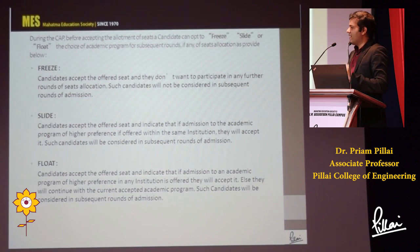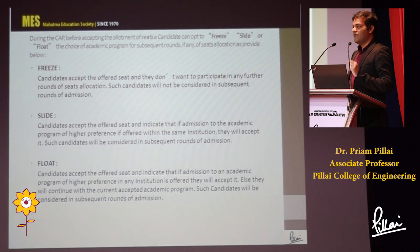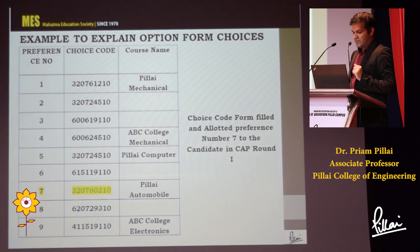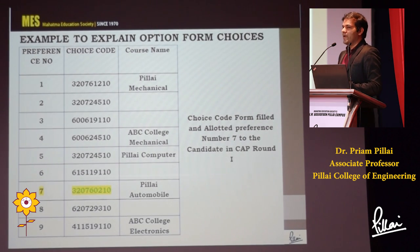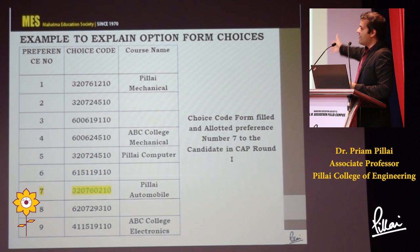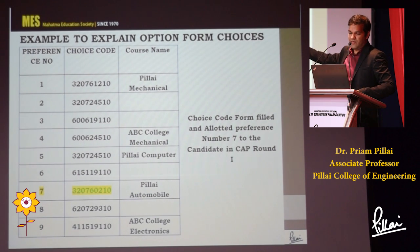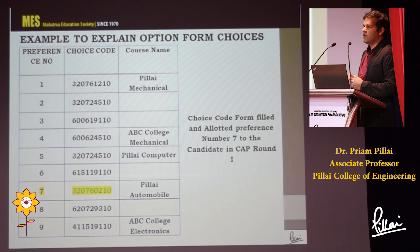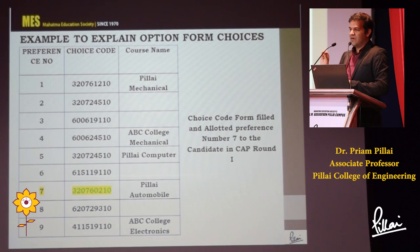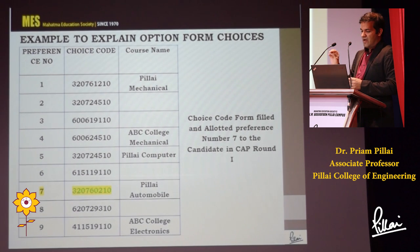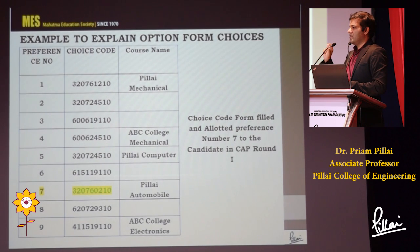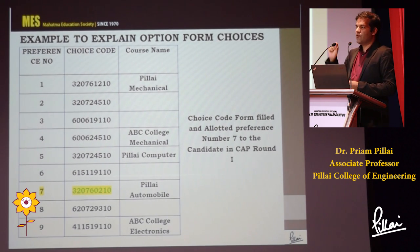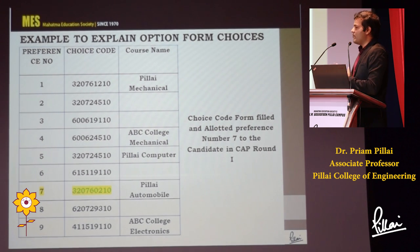When you pay 5,000 to an ARC center, you have three choices: freeze, slide, or float. For example, in the first round you've selected nine different choices and you were allotted Pillay Automobile Engineering. You go to an ARC center, pay 5,000 rupees, and choose from freeze, slide, and float. If you are totally happy — I don't want anything else, I'm very happy with Pillay Automobile — what you will do is select freeze. If you select freeze, Pillay Automobile will become your choice for the next three rounds and it will not change.